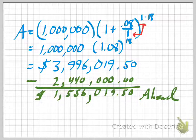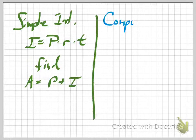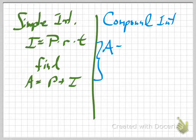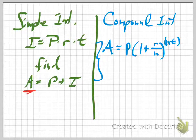Let's review those formulas one more time. Simple interest: I equals P times R times T. If you want the actual amount at the end, add P and I together. With compound interest, it automatically computes the amount A. The formula is A equals P times the quantity 1 plus R over N to the N times T power. Any letters that appear in both formulas mean the same thing: P is principal, R is the interest rate, and T is time in years.